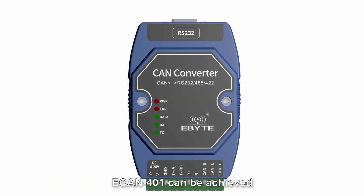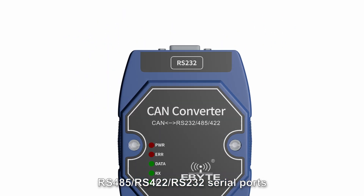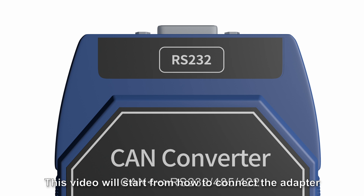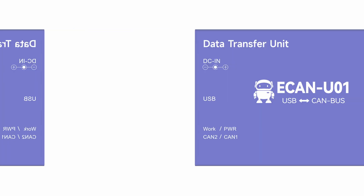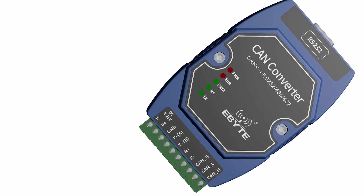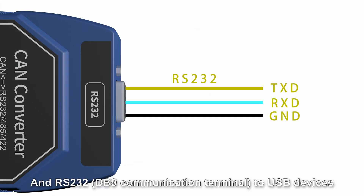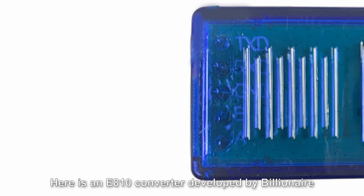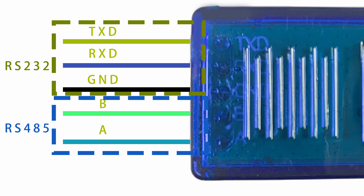eCAN 401 can be achieved by directional conversion between CAN and RS485, RS422, RS232 serial ports. This video will start from how to connect the adapter and explain the simple debugging of the upper computer. Configuration and converter debugging requires an eCAN U01 device to simulate the CAN bus, and RS485 to USB devices and RS232 to USB devices. Here is an E810 converter that meets both USB to RS232 and RS485.